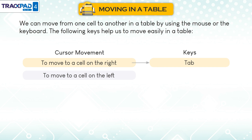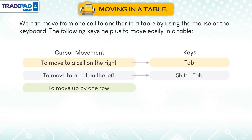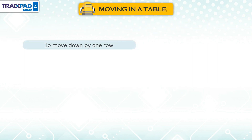To move to a cell on the left, press Shift plus Tab. To move up by one row, press Up arrow. To move down by one row, press Down arrow.